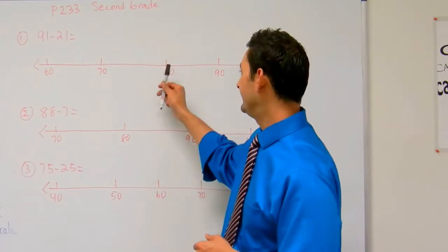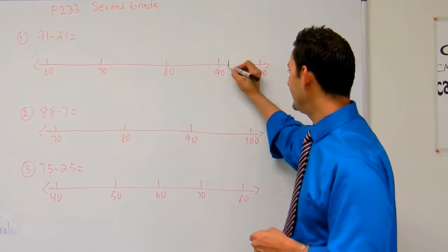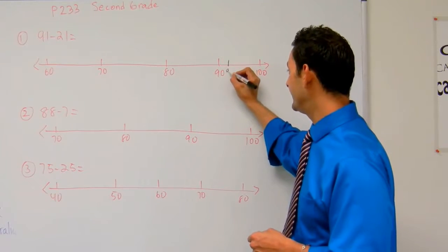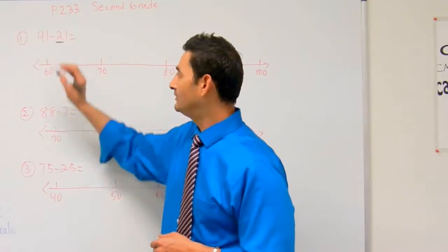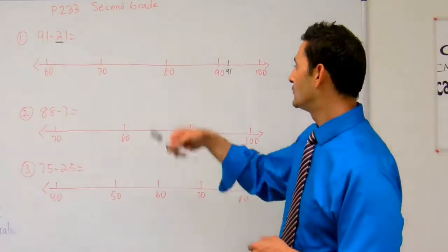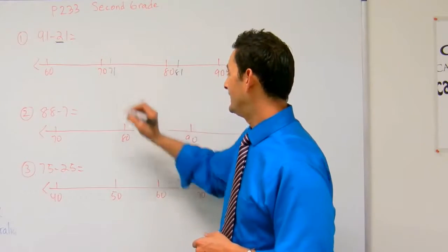I'm going to go back three: 80, 70, 60. Now I'll mark my point at 91, and I'm going to jump back 21 spaces. My knowledge of place value says I have to jump back twice. That's going to be 81, then 71.